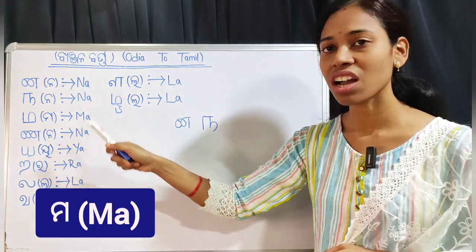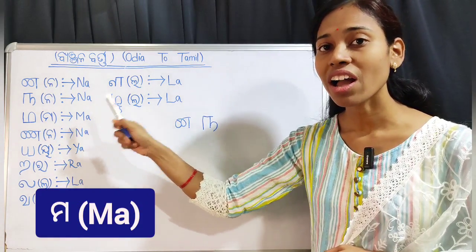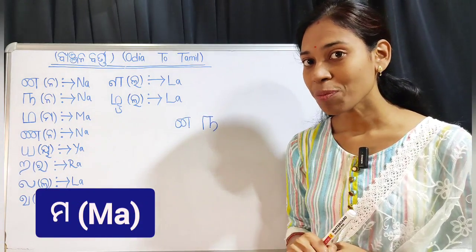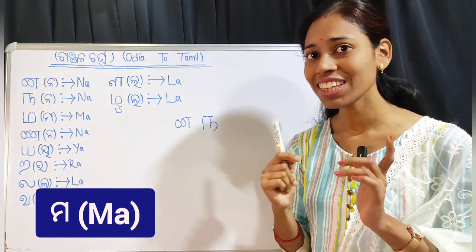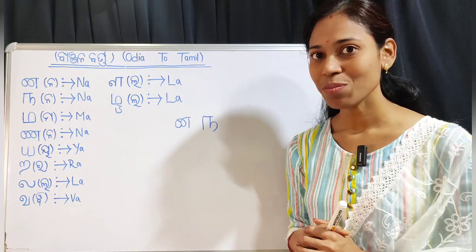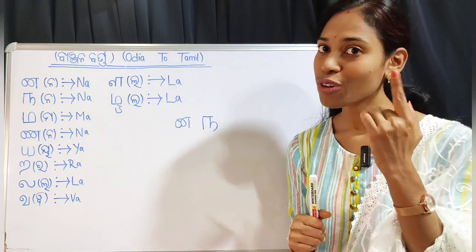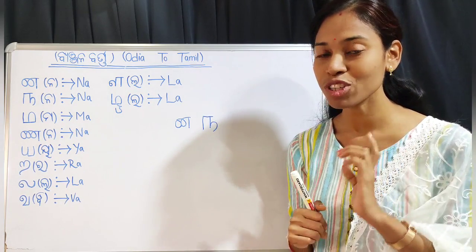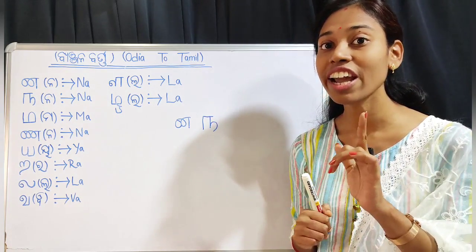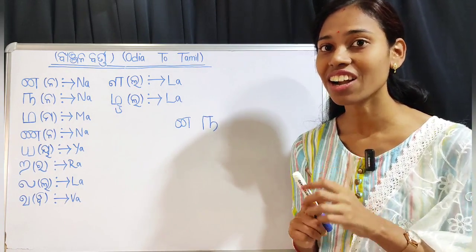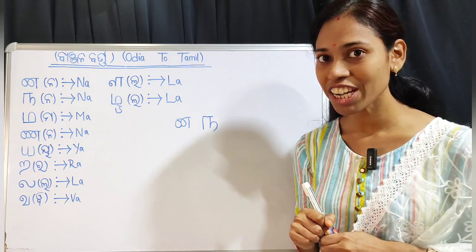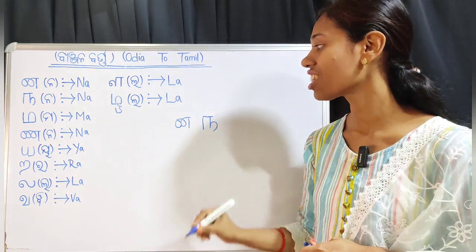Next letter is 'ma.' Ma. Ma. What do you write? Easy. Friends, I am going to learn this in the first video. Da. Da. What do you write? English letter.